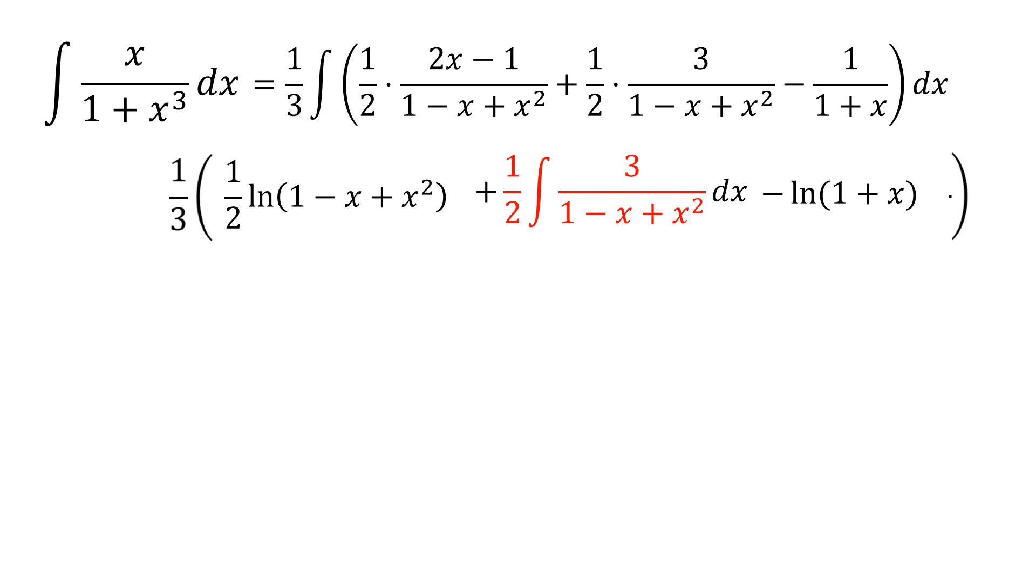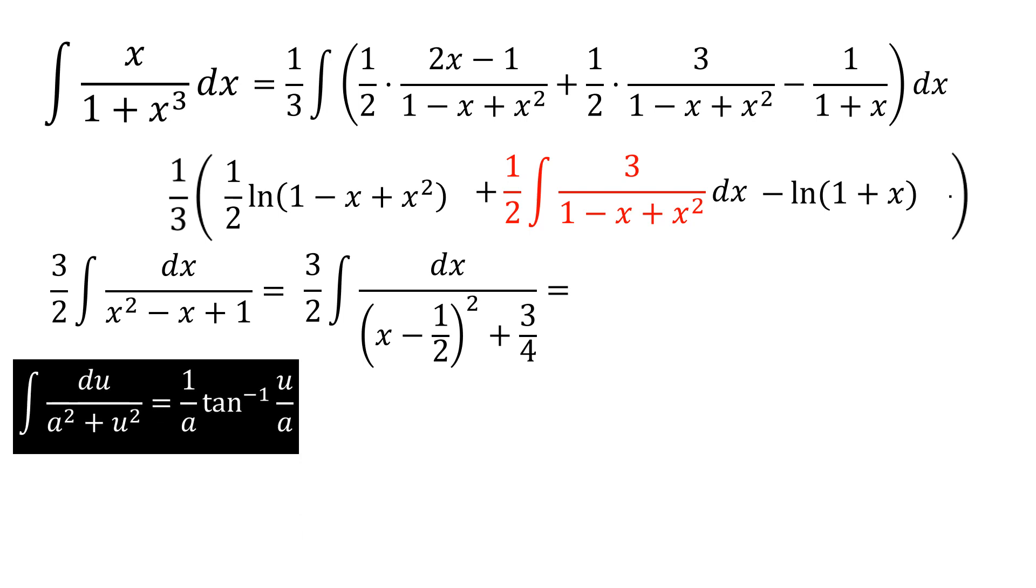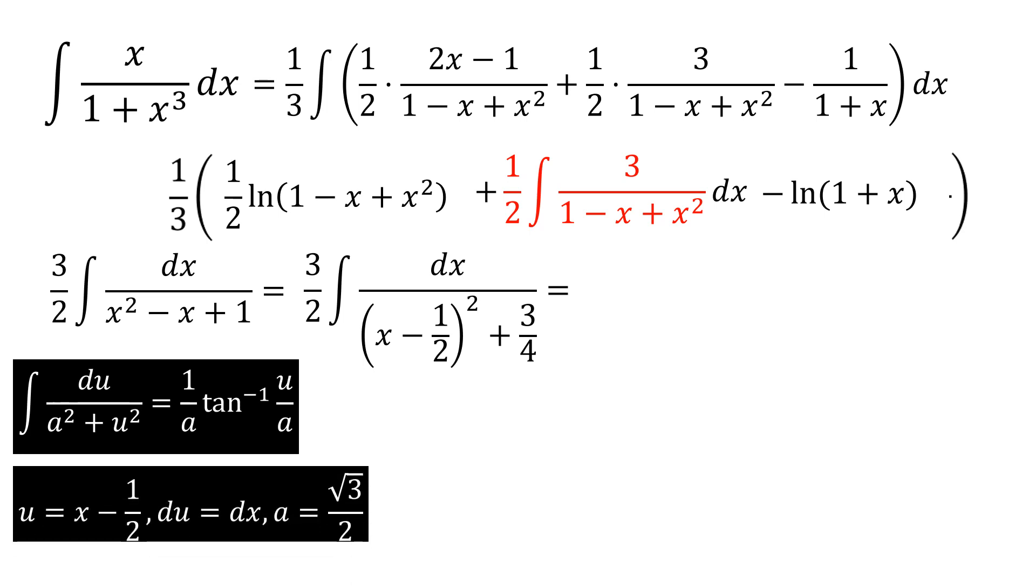Let's now focus our attention on the second integral. We said that we would solve this by completing the square, and therefore we will rewrite our integral as 3 halves times 1 over x minus 1 half squared plus 3 fourths. In this form, I can use the rule that the integral of 1 over a squared plus u squared is equal to 1 over a times the inverse tangent of u over a. If I allow u to equal x minus 1 half, this means that du will be dx and a will be equal to the square root of 3 over 2.